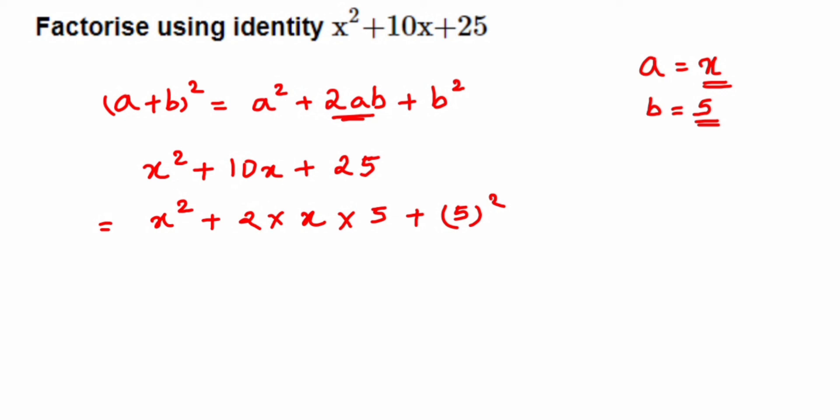We know that a² + 2ab + b² equals (a + b)². So in place of a I'll write x, and in place of b I'll write 5. The answer is (x + 5)². We have done the factorization. I hope it's clear now.